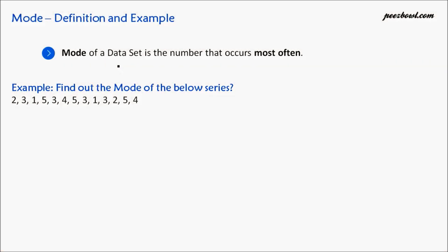Let us learn mode. The mode of a data set is the number that occurs most often. When a number appears the maximum number of times in one data set, we call that number the mode of that particular series.